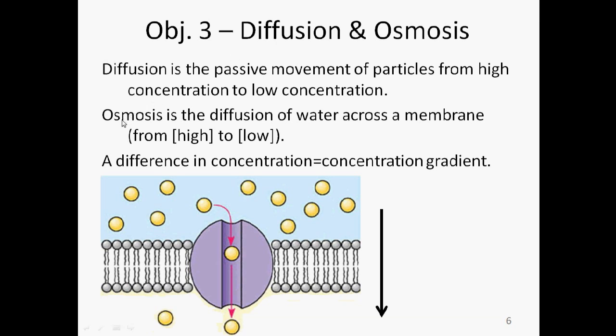Osmosis is very simple. It's the diffusion of water. It's still movement of molecules from high to low. And this is just an abbreviation for high concentration to low concentration. However, since water is such an important molecule, it has its own name when it comes to the diffusion of water. And that is osmosis. So osmosis is the diffusion of water across a membrane.